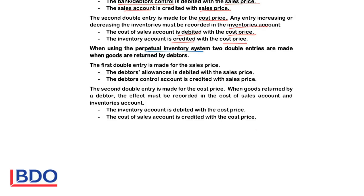When you use the perpetual inventory system, two double entries will be recorded when goods are returned by debtors. The first double entry will be at the sales price: debtors allowances is debited with the sales price to reduce income, because the goods are not sold if returned. The debtors control account is credited with the sales price to decrease the amount the debtor owes. The second double entry will be recorded at cost price: inventory is debited to increase inventory, and cost of sales is credited to decrease the cost of sales account.